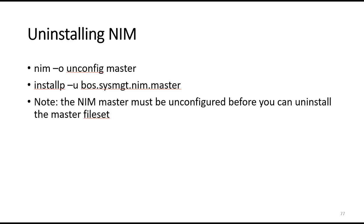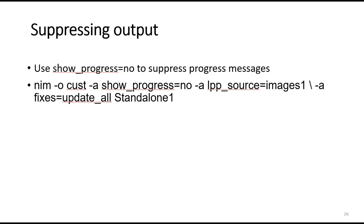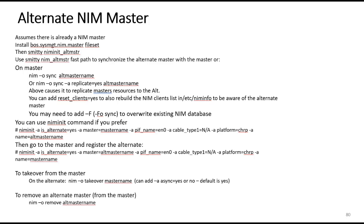To uninstall NIM, it's a 'nim -o unconfig' and then you uninstall bos.sysmgt.nim.master. A couple of things on NIM and NFS exports: do not ever export anything in your /NIM file system from your NIM server — let NIM do that. You can suppress output from the NIM processes if you want, though I don't because I want to know what's going on. You can set up an alternate NIM master using 'nim -o sync' to sync them and make sure all resources get replicated — that way if one NIM server goes down you can take over with the other.